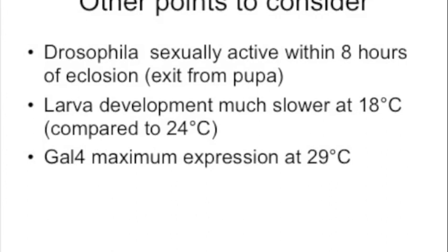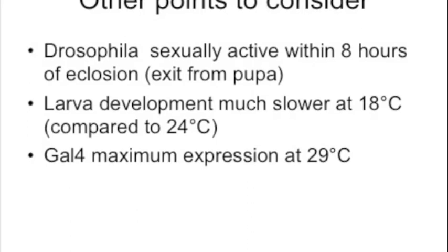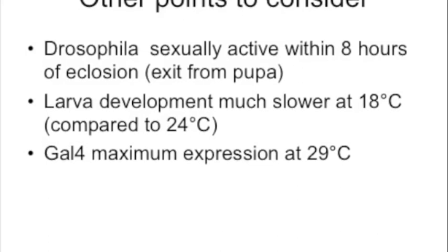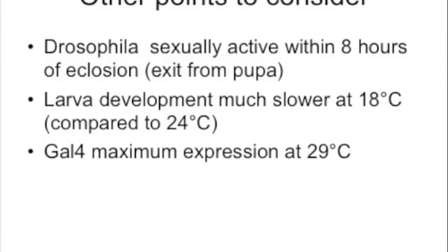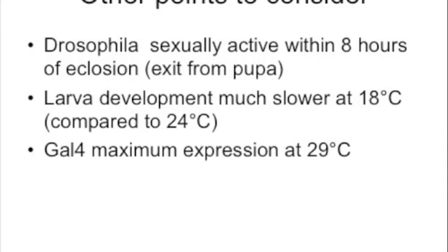Drosophila are sexually active within eight hours of eclosure — that is, when the adult comes out of the pupa. This is something you have to consider when mating flies, as you do not want to use females that have already mated. You should also consider that larval development is slower at 18°C compared to 24°C, where flies are normally maintained, and that GAL4 expression is higher at somewhat higher temperatures, with the optimum being around 29°C. Take all this into consideration when planning your experiment.